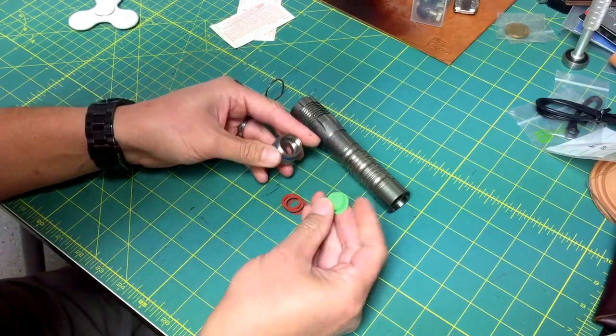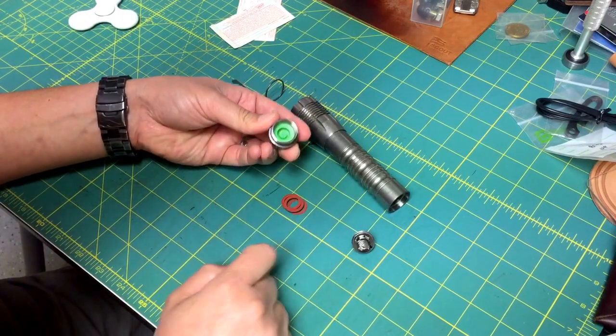So you just push the tail cap boot out like that, and to put it back in, just push that down to the bottom.